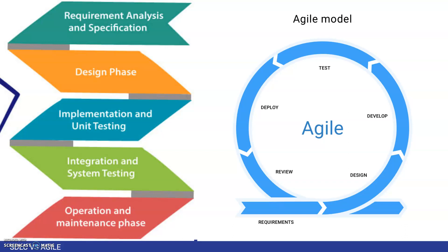We are not saying the waterfall model is bad, but due to time constraints we need some improvements — specifically for consistent, faster delivery, improvement in quality, and fast feedback from the market so we can improve as soon as possible. This is where Agile comes in, solving the problem of slow feedback.